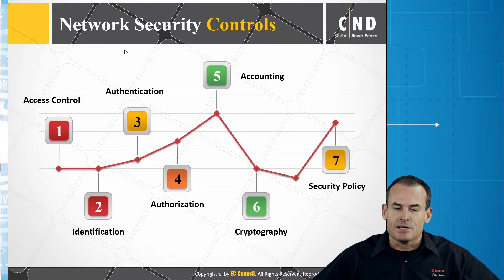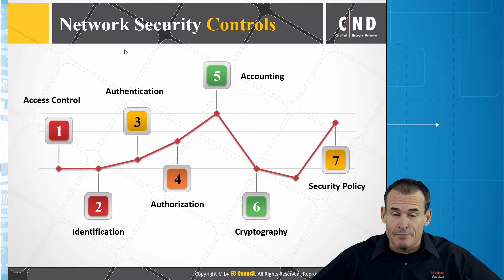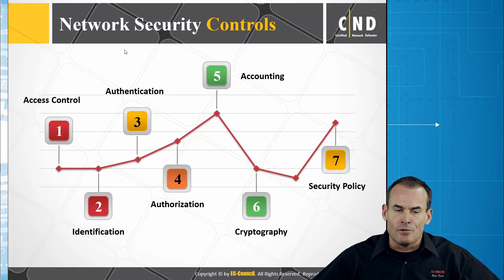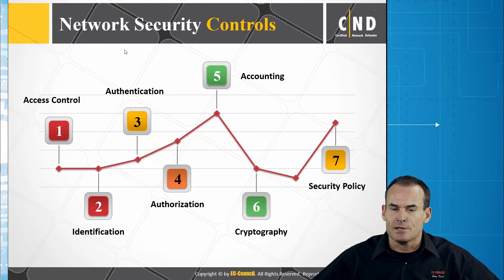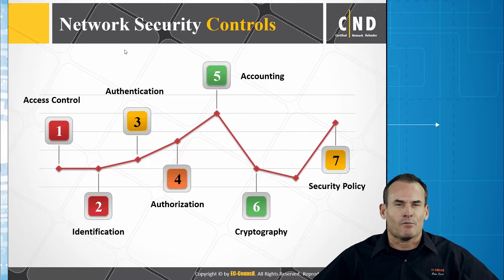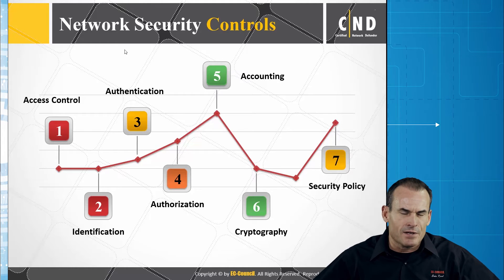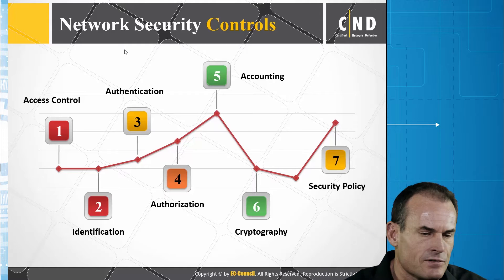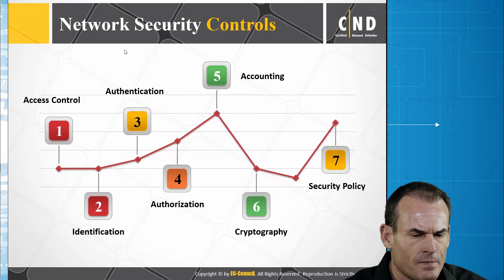Accounting is a tracking mechanism for determining who has accessed what objects. We look at things like RADIUS and log files — that deals with accounting. RADIUS also gives us access control as well.